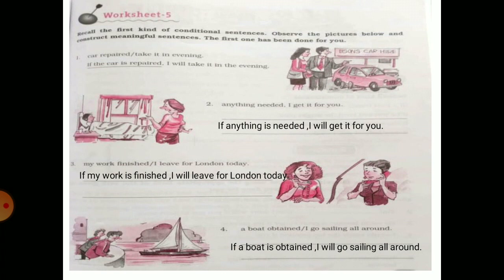Worksheet 5: look at the pictures and complete the sentences. Car repair, take it in the evening — if the car is repaired, I will take it in the evening. Anything needed, I get it for you — if anything is needed, I will get it for you. My work finished, I leave for London today — if my work is finished, I will leave for London today. A boat obtained, I go sailing all around — if a boat is obtained, I will go sailing all around.